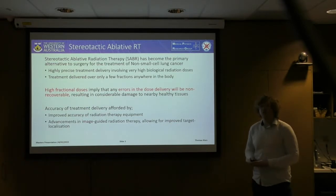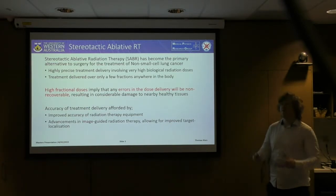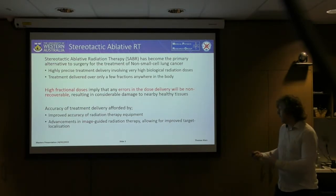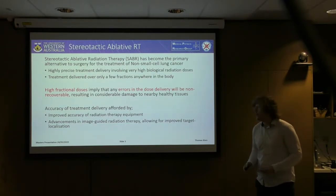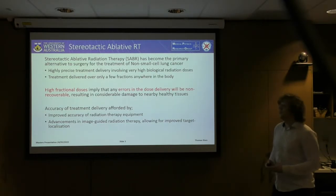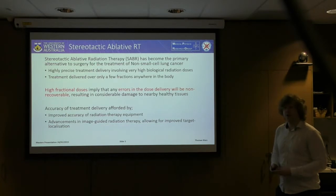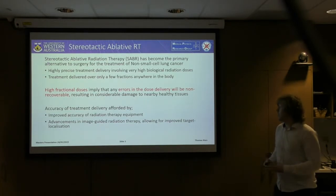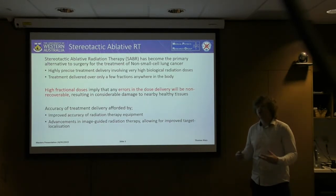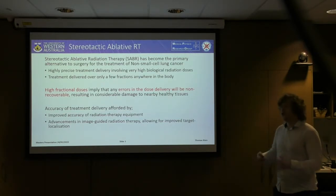Consequently, these types of treatments require a very high level of accuracy, which has been afforded by improvements to radiation therapy equipment as well as advancements in image-guided radiation therapy, allowing improved localisation for target tracking. Image-guided radiation therapy means we can acquire images during treatment delivery to account for changes in patient anatomy during the course of a treatment fraction.